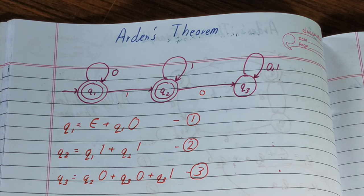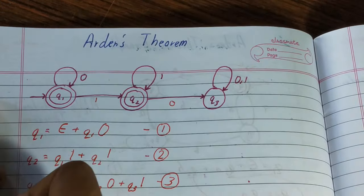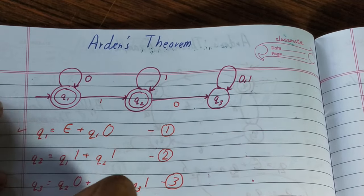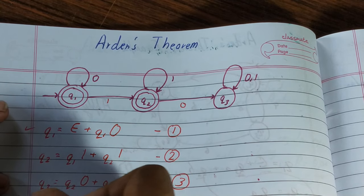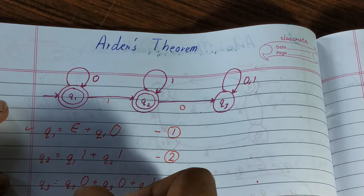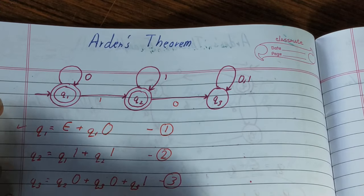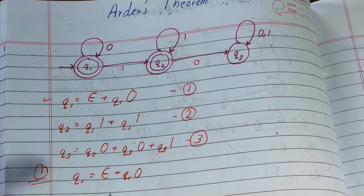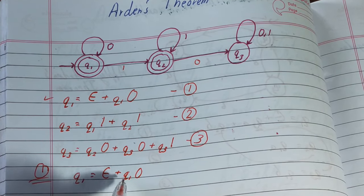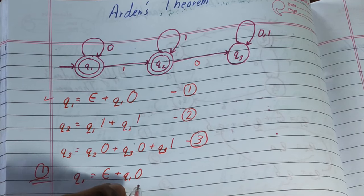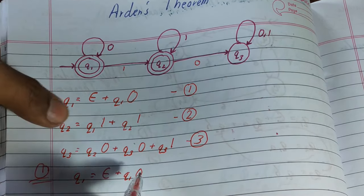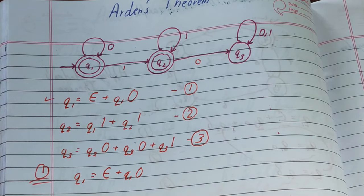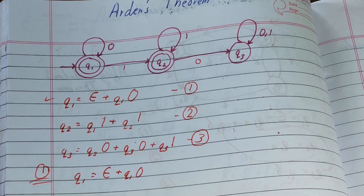Let's start with the first one. We'll pick the equation for q1: q1 = null + q1·0. We need to check if this equation is linear — meaning it should not contain more than one state. In this case it only contains q1, so it is already linear, and we can directly apply Arden's theorem.